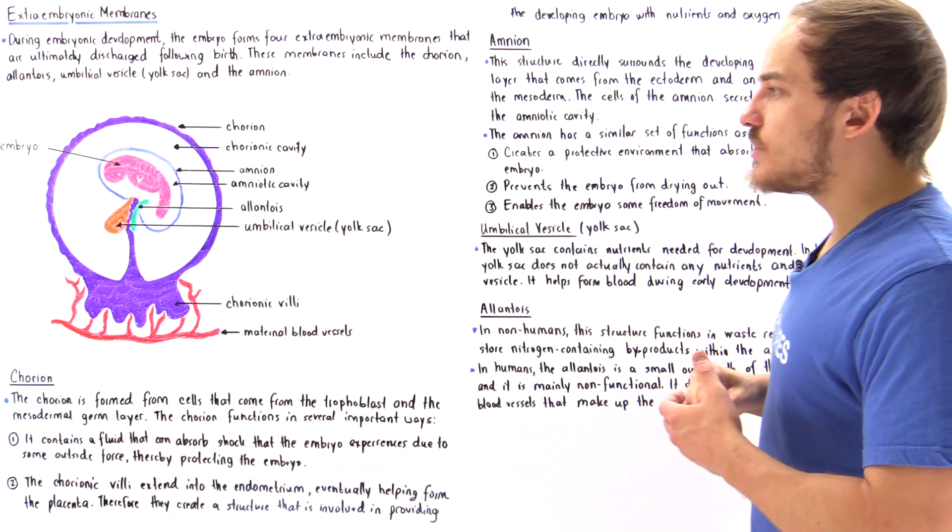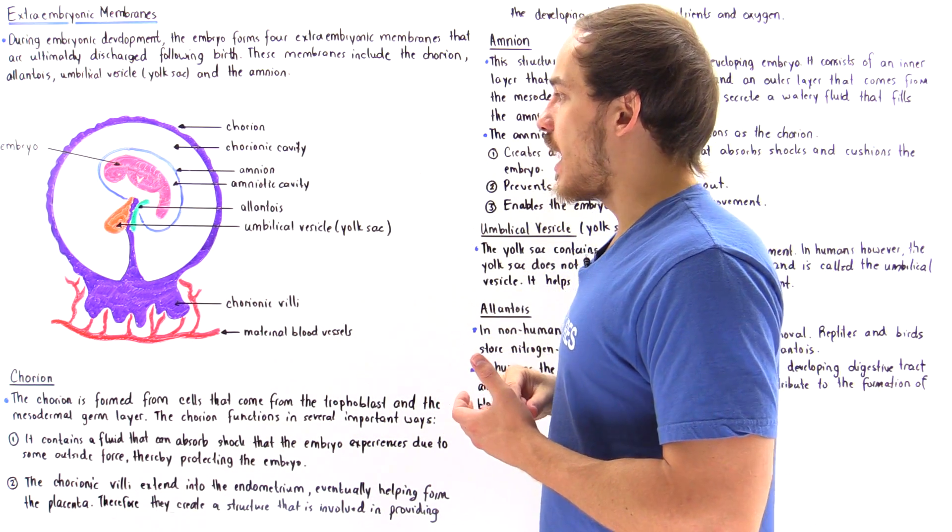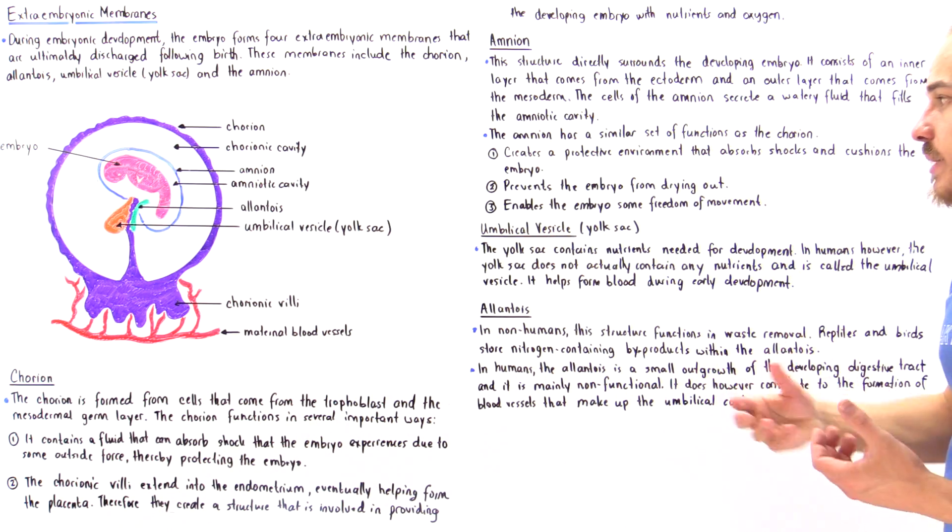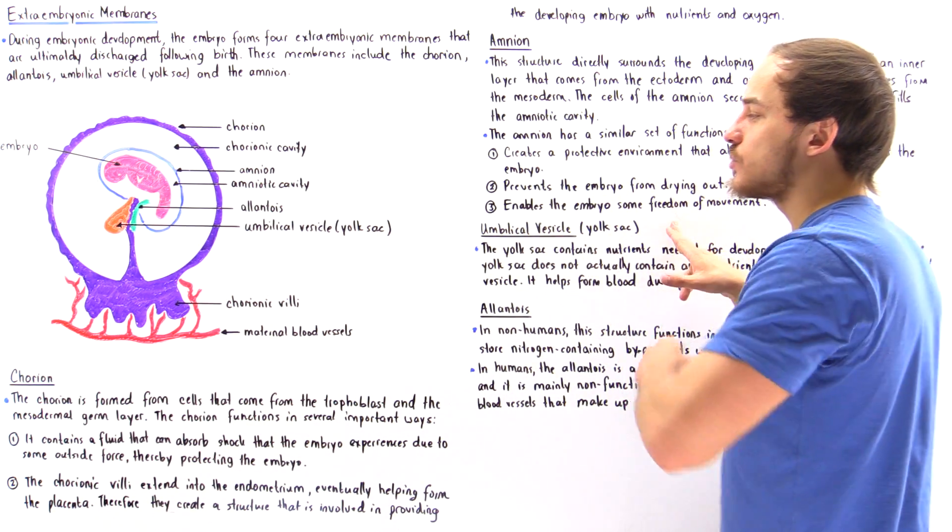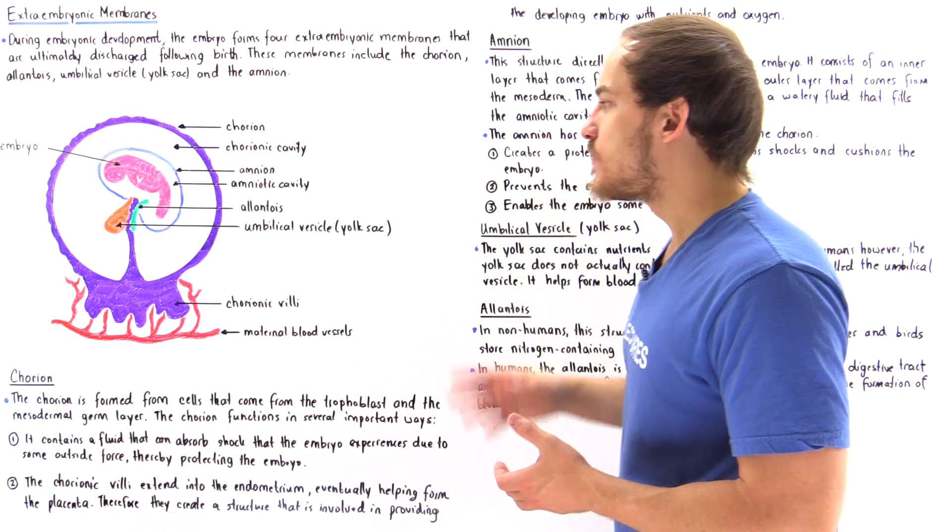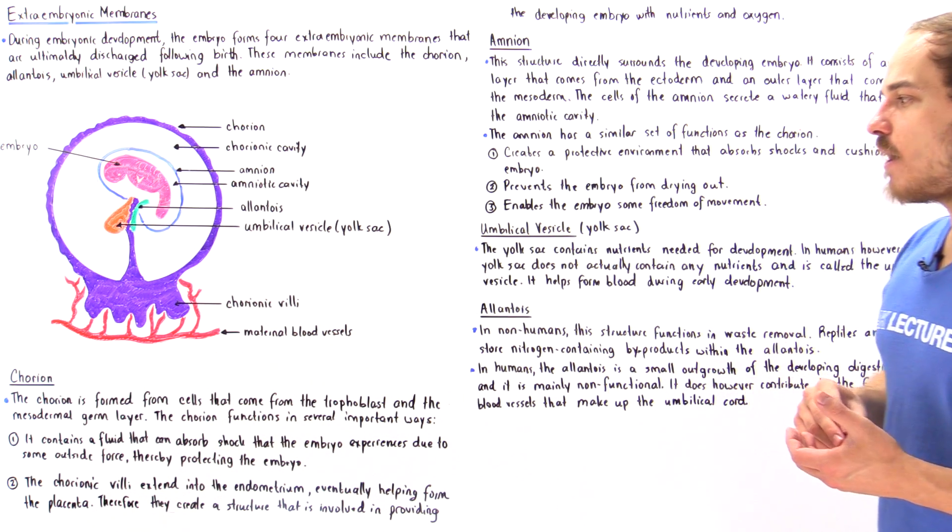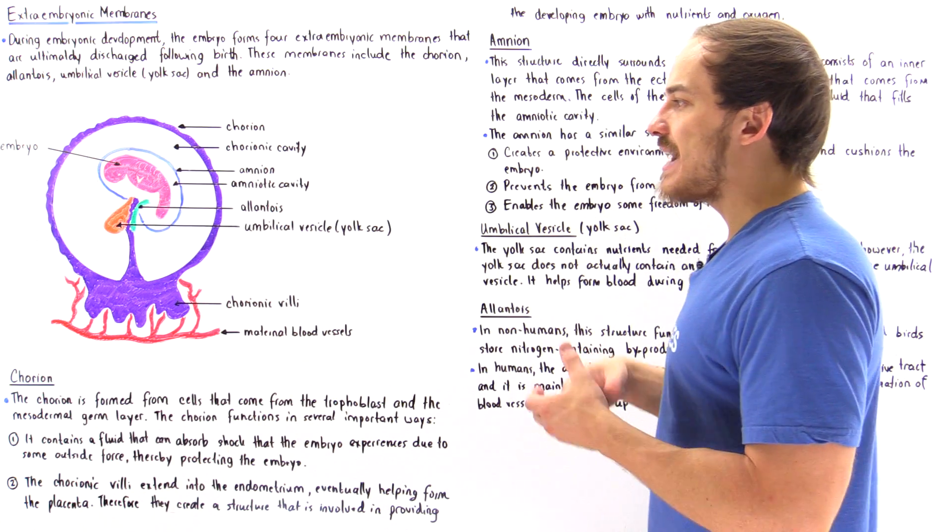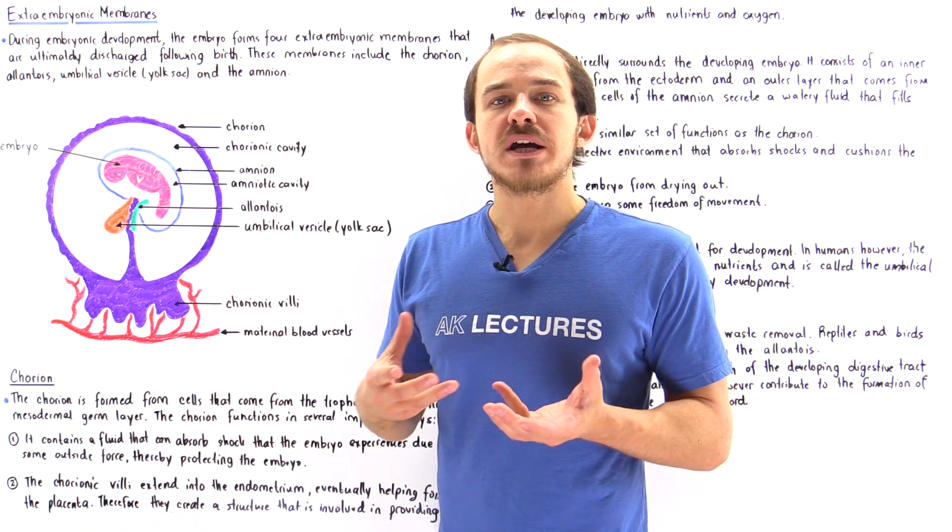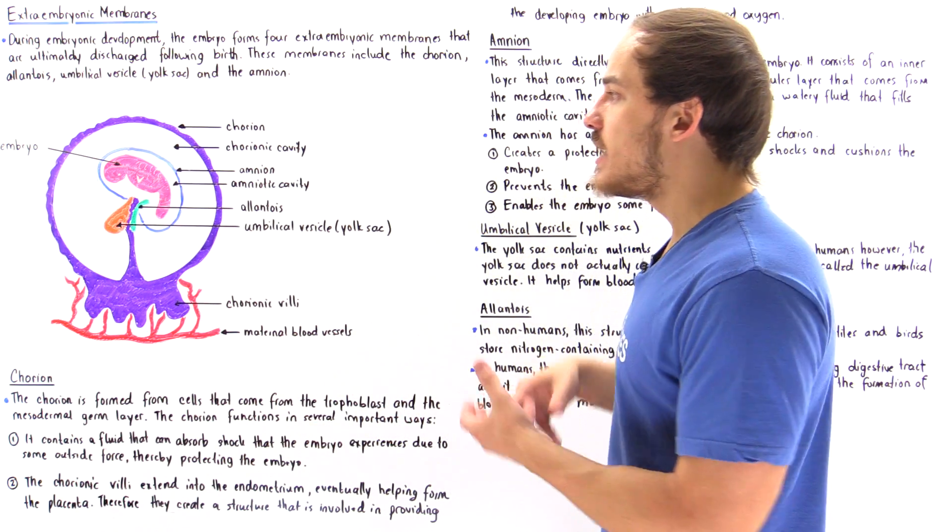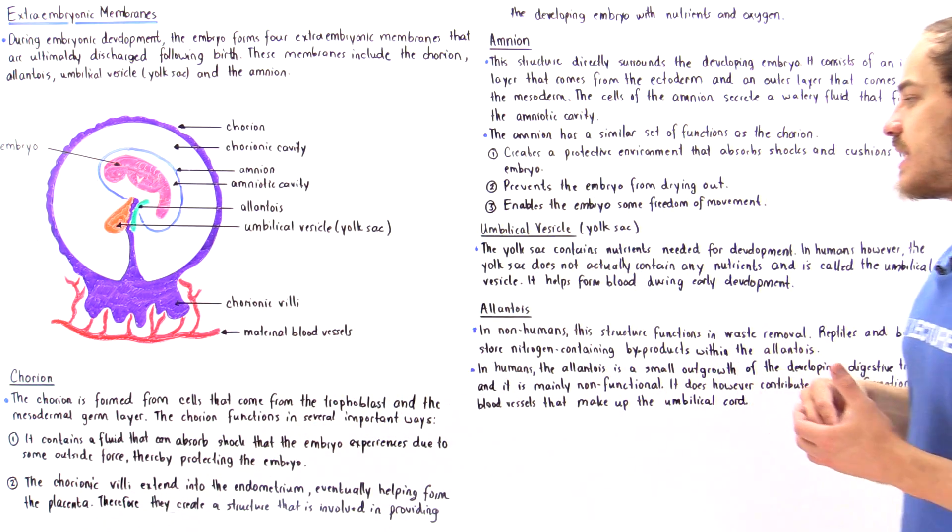Now let's move on to another extra embryonic membrane known as the umbilical vesicle. So in humans, the yolk sac is actually called the umbilical vesicle because it doesn't actually contain any yolk. So what the umbilical vesicle does in early embryological development is it actually helps produce some of the red blood cells, so it produces some of the blood that the fetus actually contains.